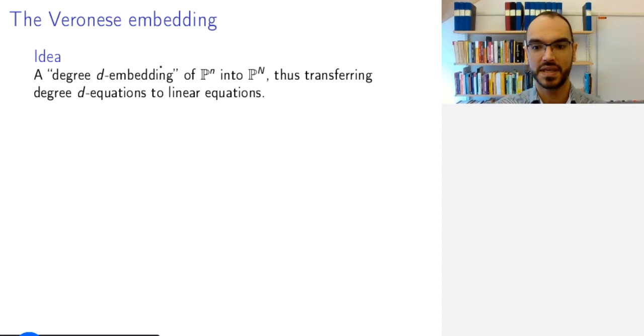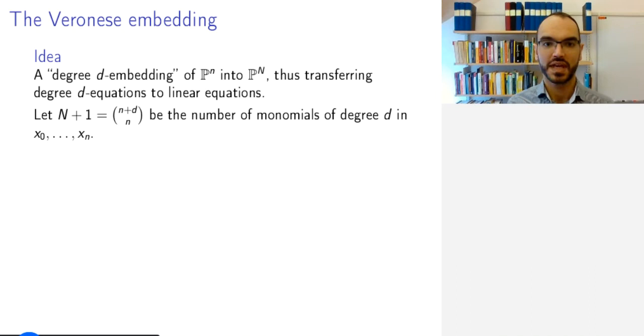So how do we do this? We look at all possible monomials of degree d in the variables x_0 to x_n, and set this number to be N+1, so these are (n+d choose n) monomials.